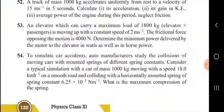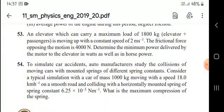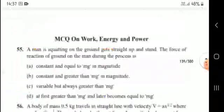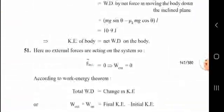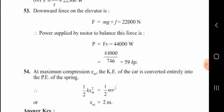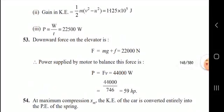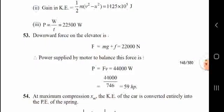Numerical: An elevator with passengers has a total mass giving a downward force of 22,000 N, and friction opposing motion is 4000 N. Power supplied by the motor at 2 m/s: P = F × v = 44,000 watts. Converting: 44,000 ÷ 746 = 59 horsepower.